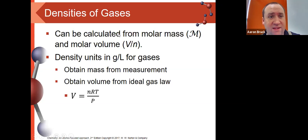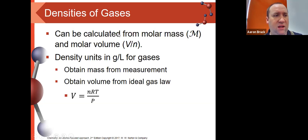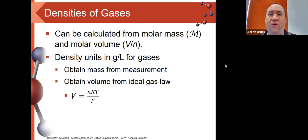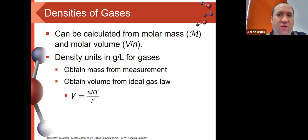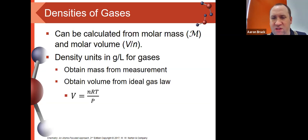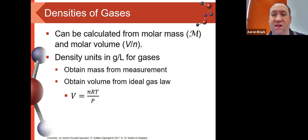When it comes to gas density, we can calculate it by looking at the molar mass of a gas and its molar volume. The molar volume depends on a couple of factors. For STP, the molar volume is going to be 22.4 liters, which makes things really easy. We just take the molar mass, divide it by 22.4 liters, and that gives us the density of the gas at STP.